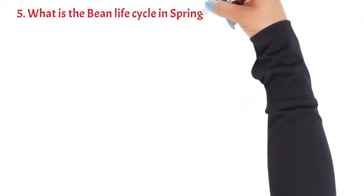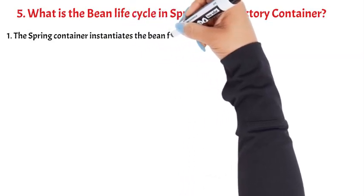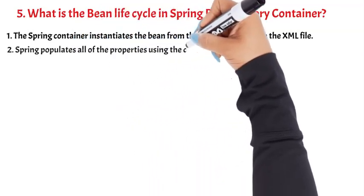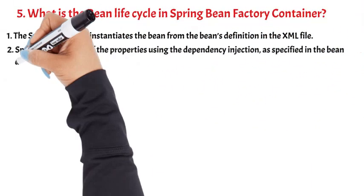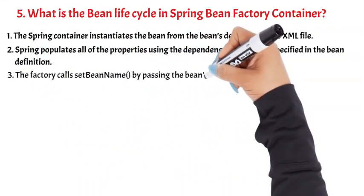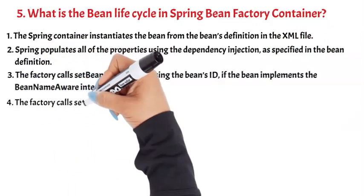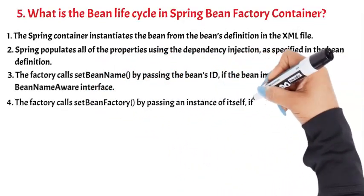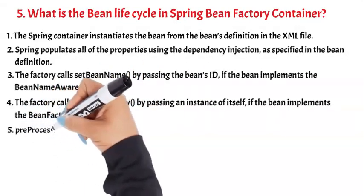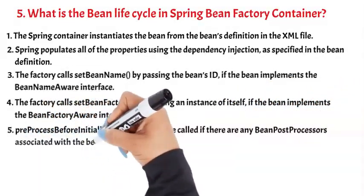Question 5: What is the bean life cycle in Spring Bean Factory container? 1. The Spring container instantiates the bean from the bean's definition in the XML file. 2. Spring populates all of the properties using dependency injection, as specified in the bean definition. 3. The factory calls setBeanName by passing the bean's ID, if the bean implements the BeanNameAware interface. 4. The factory calls setBeanFactory by passing an instance of itself, if the bean implements the BeanFactoryAware interface. 5. Pre-initialization methods are called if there are any bean post-processors associated with the bean.